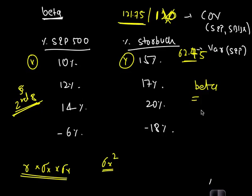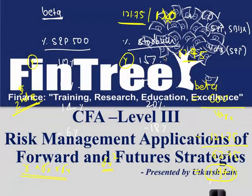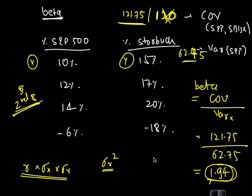How do we calculate beta of a stock? We say covariance divided by variance of x axis values. In this case, 121.75 divided by 62.75, how much is that? 1.94. So 1.94 is the beta of Starbucks stock. Alternatively, in your stat function look for B. That's how we calculate beta of a particular stock.